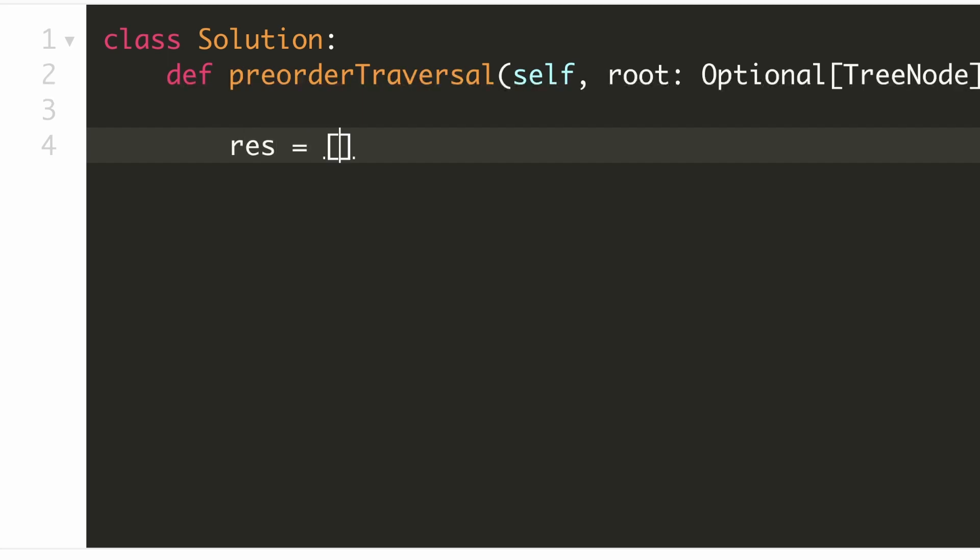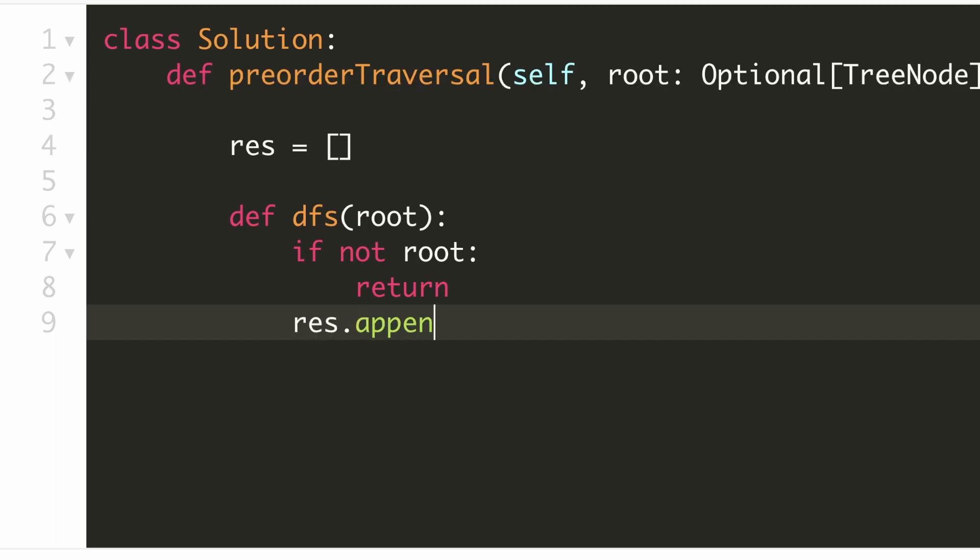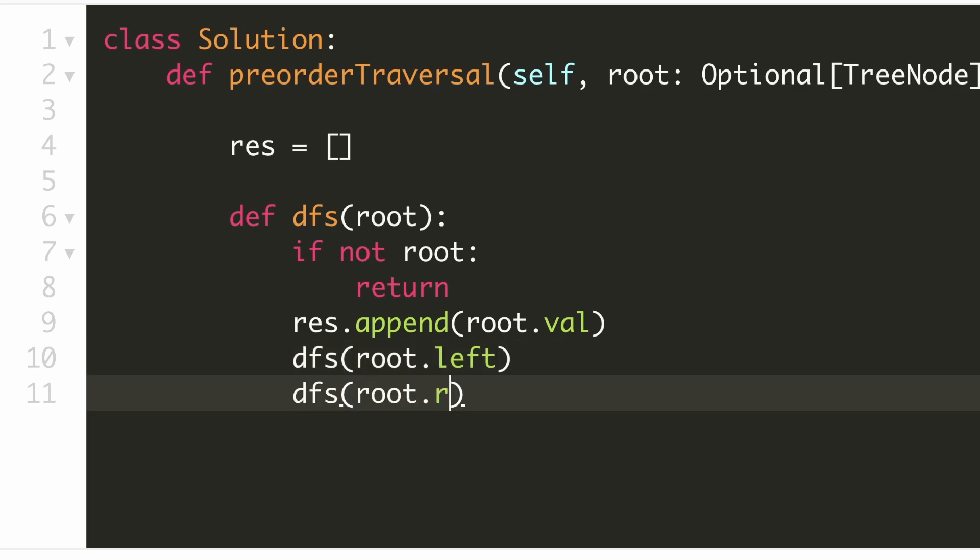Let's define a variable to store a pre-order traversal. Now we'll define our recursive DFS function. Now we'll write our base condition to check if we have reached a null node. In that case, we'll return from the function. Now since we have ensured that our root is not null, we can append its value to our result.